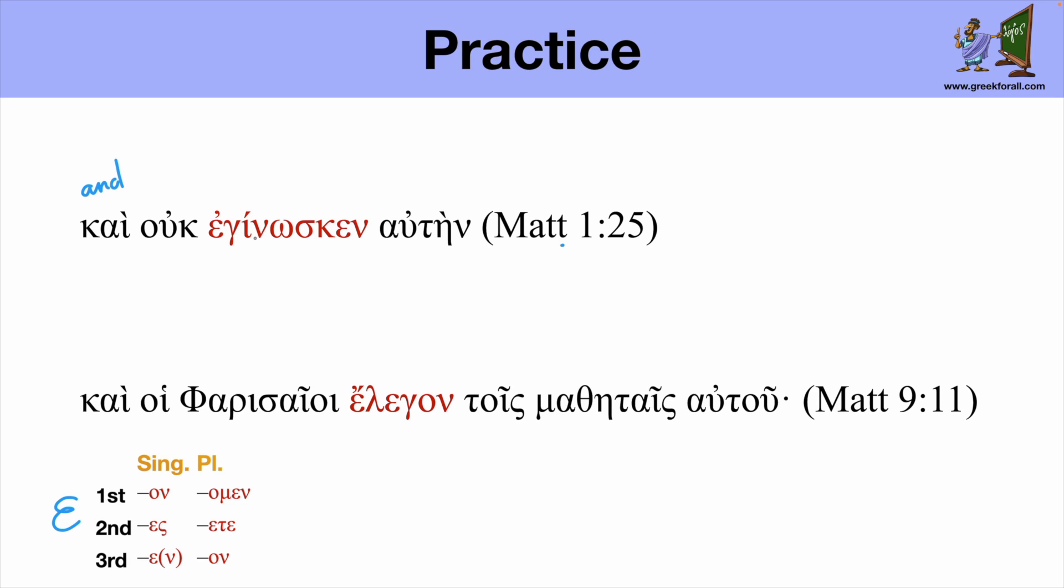And we have the verb here, ginosko, which I know from my vocabulary. So the verb ginosko means I know, and it starts with gamma. So here clearly we see the augment epsilon before this word ginosko. So we know it's a past tense.